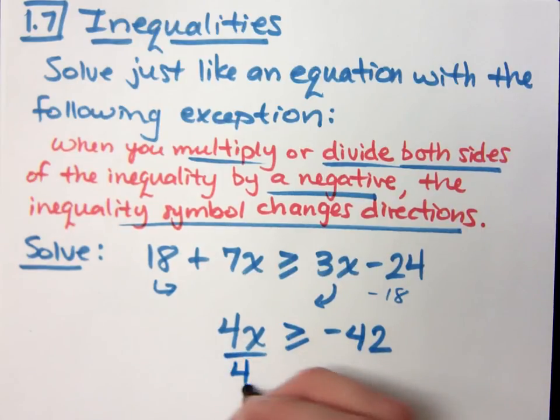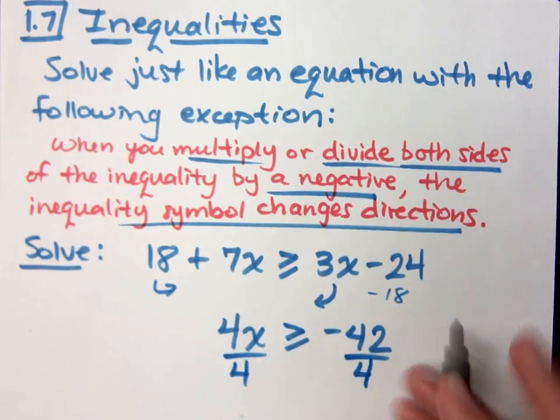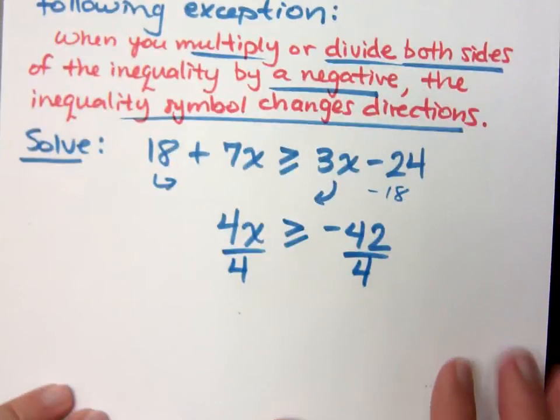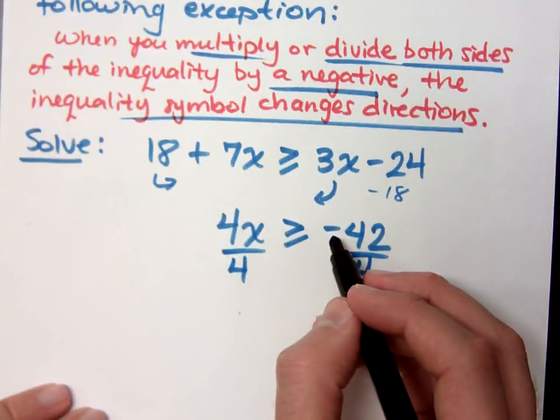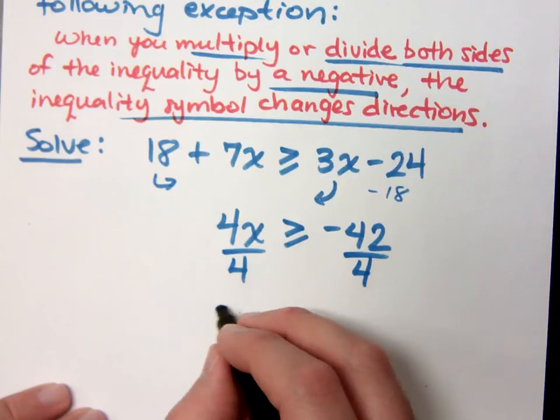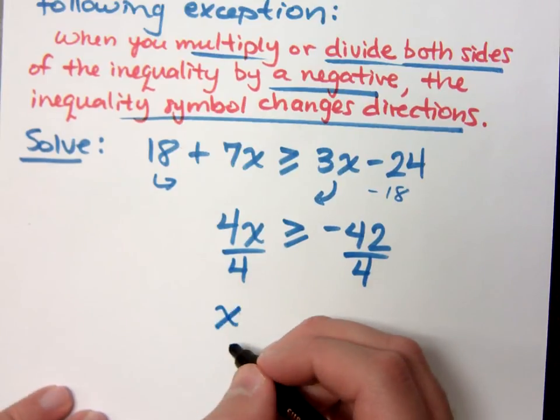To finish solving this, I divide both sides by 4. But I have to be careful. I've got a negative here. But don't be fooled. Even though that is a negative, I'm not dividing by a negative.